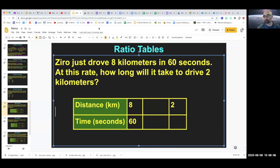Ratio tables are a really easy way to do stuff with ratios. So let's look at what we just saw in that cool video. That guy driving, his name was Zero, and he just drove eight kilometers, eight kilometers in 60 seconds. He's driving pretty fast.